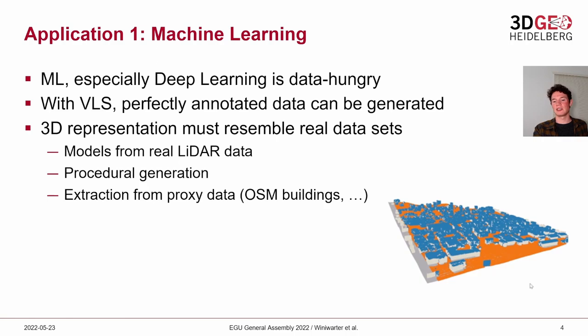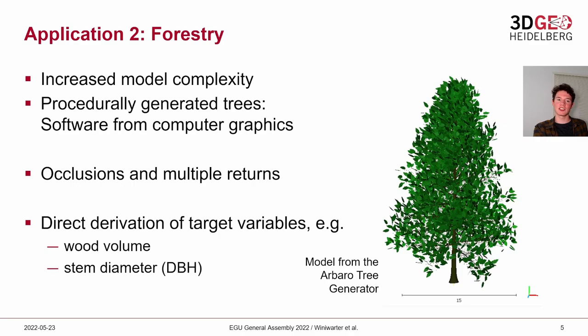In the second application of forestry, there is increased model complexity. Shown on the right is a model generated using the procedural Arbaro tree generator. In the forestry context, occlusions and multiple returns of a single laser beam are especially important. You can also directly derive target variables from those models — for example, stripping away all the leaves to look at wood volume, or calculating the stem diameter based on the mesh model.